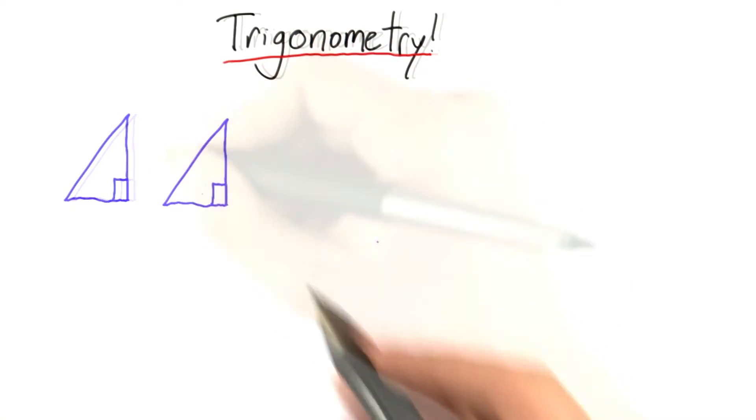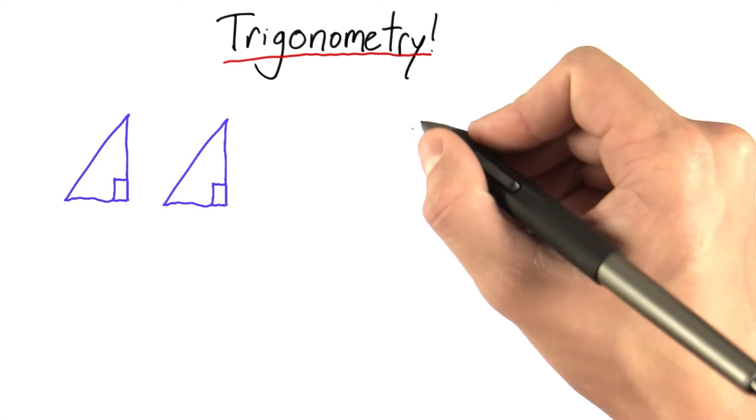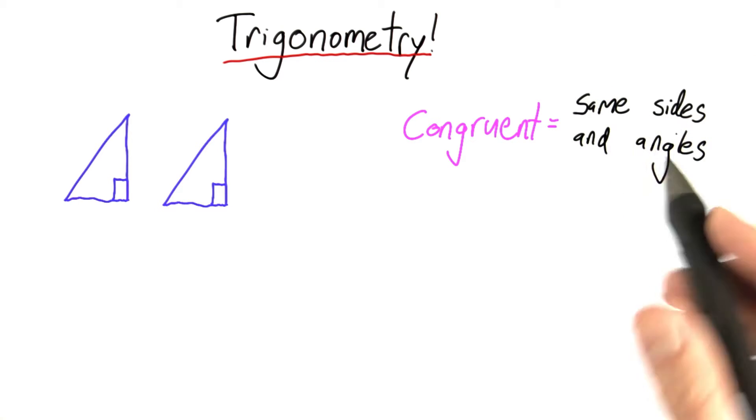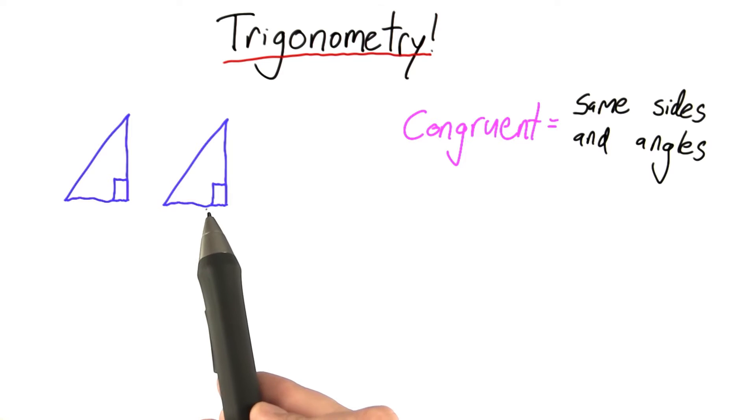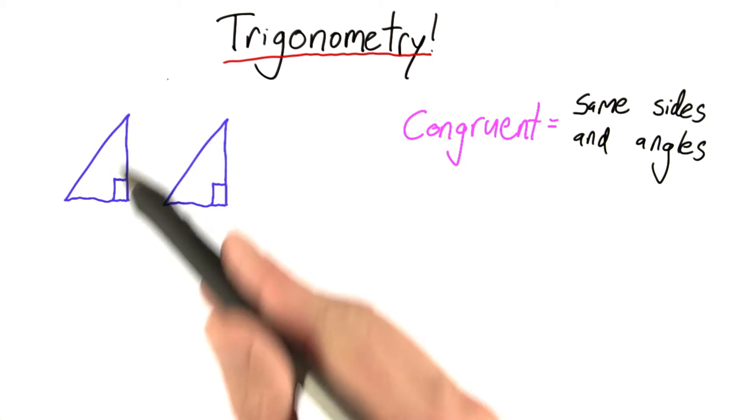Here is a copy, identical in every way, same angles and same sides. We call that congruent. And that just means we have the same sides and the same angles. If this has a length of 7, this has a length of 7. If this has a length of 12, this has a length of 12. And likewise for the angles.